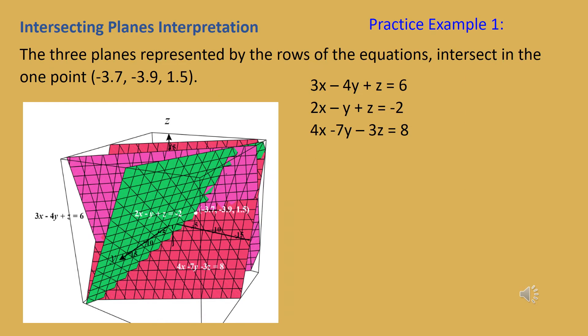There are two geometric ways to interpret solution sets to linear systems. One is by looking at the equations as spaces — each equation represents a two-dimensional plane in three-dimensional space. The equation 3x minus 4y plus z equals 6 is represented by the pink plane, 2x minus y plus z equals negative 2 is the green plane, and 4x minus 7y minus 3z equals 8 is the reddish plane.